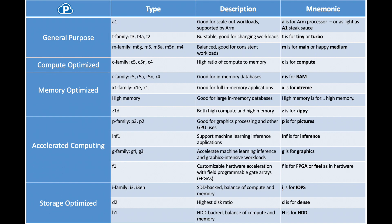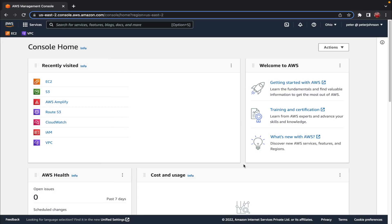Now let's talk about instance types. Mainly we have general purpose, compute optimized, memory optimized, accelerated computing, and storage optimized instances. Within these categories you can see subcategories like the A1, T family, and M family. The selection of an instance mainly depends upon the type of application you want to deploy. For example, if your application requires more computational power, go for a compute optimized instance; if it requires more memory, go with a memory optimized instance.